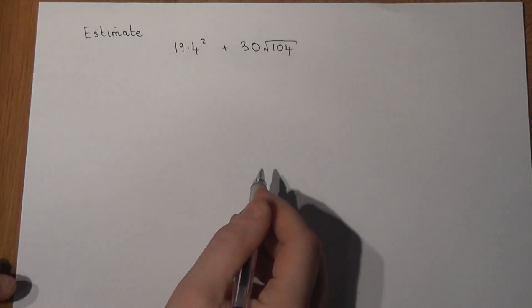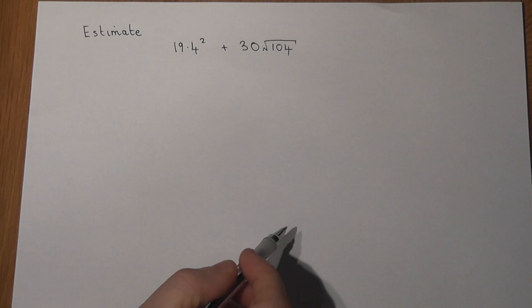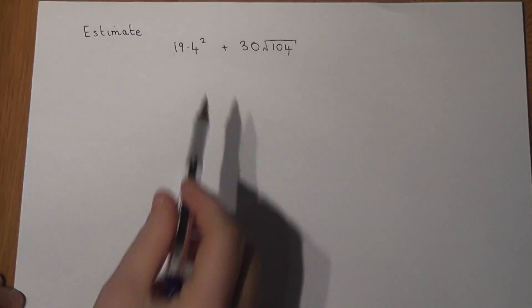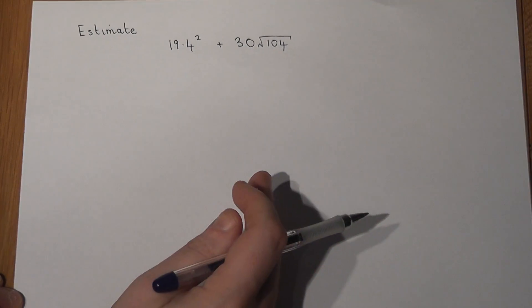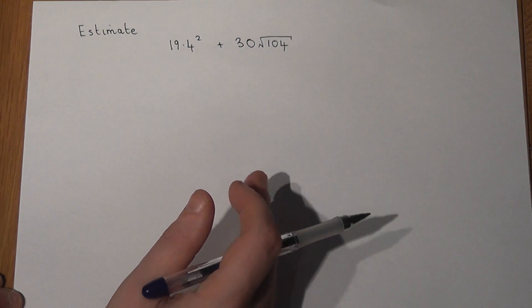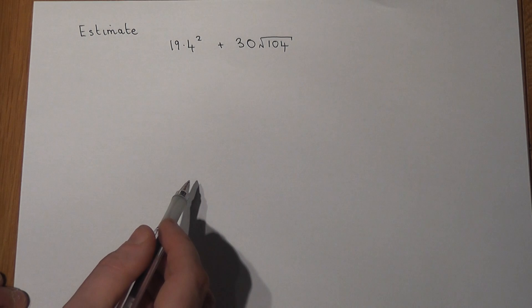This example reviews a key skill which is estimation and also puts a bit of BIDMAS in there as well. Now we're asked to estimate this particular expression. The key thing not to do here, which a lot of students do, is to plough in and start to work things out straight away. The key here is to round all of these figures to one significant figure and to work out an estimation.